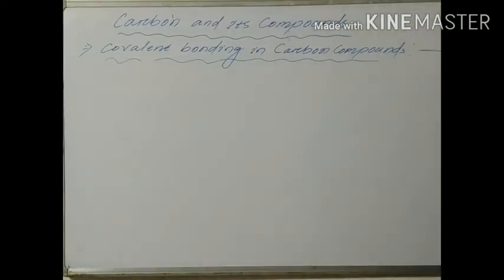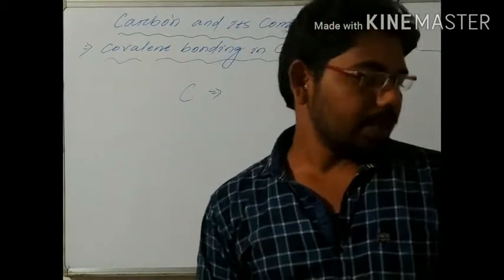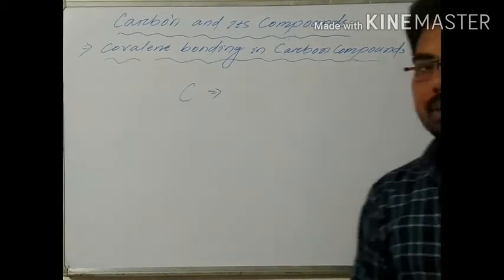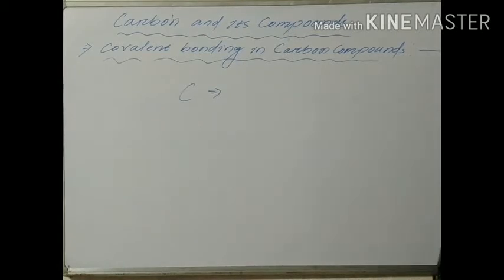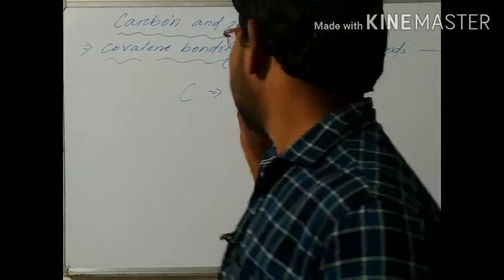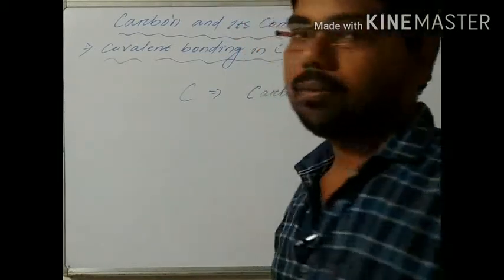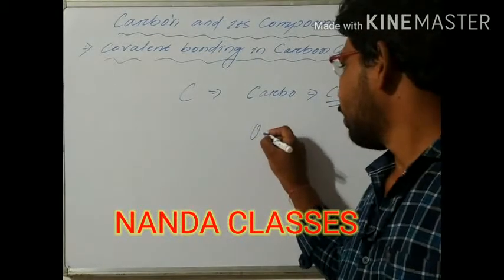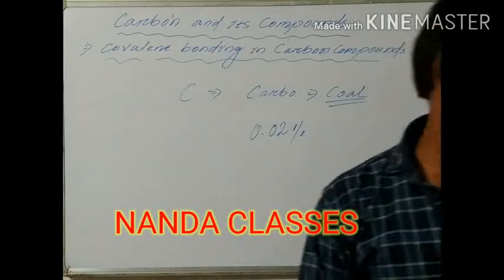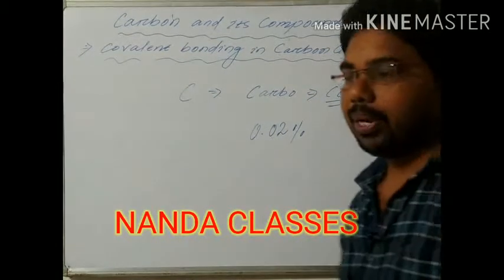Carbon has the symbol C. Carbon is the most important element — or the third most important element — after oxygen and hydrogen. In the Earth's crust, carbon is mainly derived in the form of coal. Its Latin name is 'carbo' — C-A-R-B-O — which means coal. In the Earth's crust, only 0.02% of carbon is present, in the form of carbonates, hydrocarbonates, and petroleum.